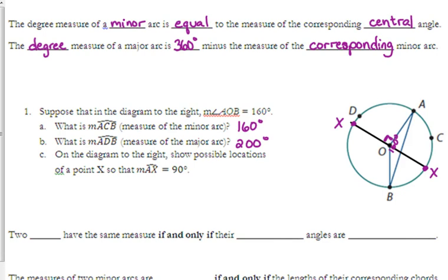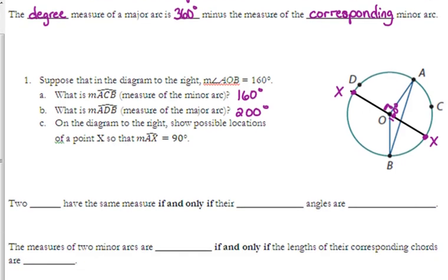So, I saw a few people that had one or the other of those. Let's fill in the rest of these blanks. Two arcs have the same measure if and only if their central angles are congruent. That kind of makes sense, since the measure of the arc is the same as the measure of the central angle.